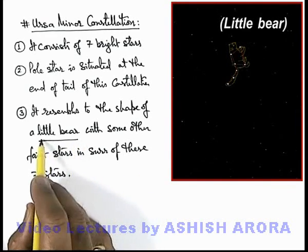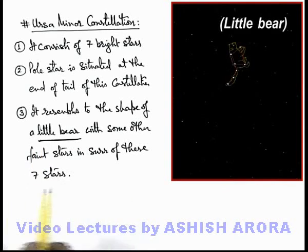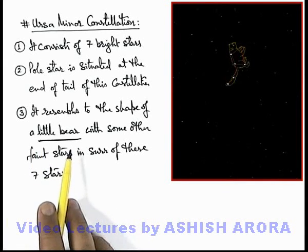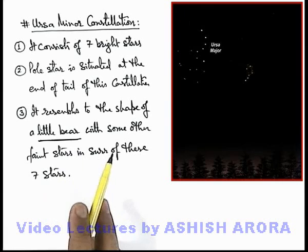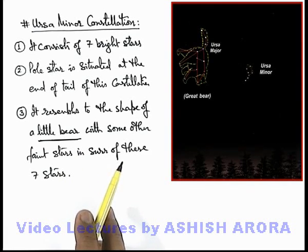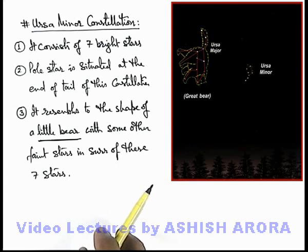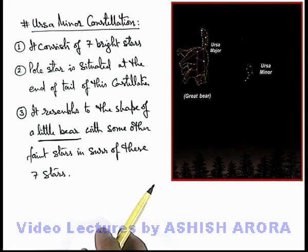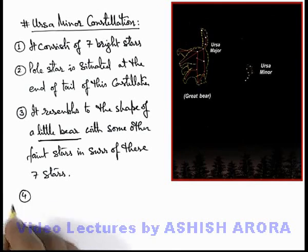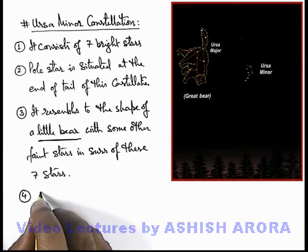That's why it is also called the little bear constellation. This Ursa Minor, as we already discussed, is also called the little bear constellation. Another difference between Ursa Major and Ursa Minor is that Ursa Major looks like a big bear with its tail pointing in a downward direction, while Ursa Minor looks like a little bear with its tail pointing in an upward direction.